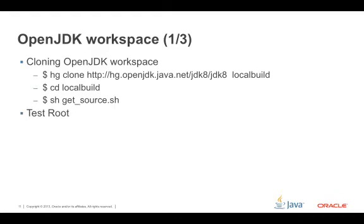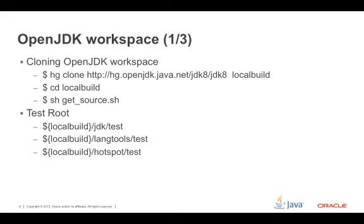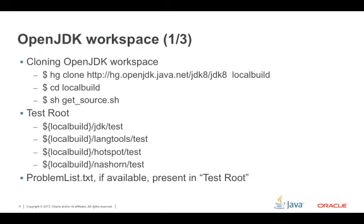Tests are located in jdk/test. Langtools tests are at langtools/test, hotspot tests at hotspot/test, and Nashorn tests at nashorn/test. A problem list text file, if available, is present in the test root directories. The JDK test repository currently has a problem list text file listing all known problematic test cases. This is a good place to start if you want to contribute but don't know where to begin — look at those test cases and start improving them.